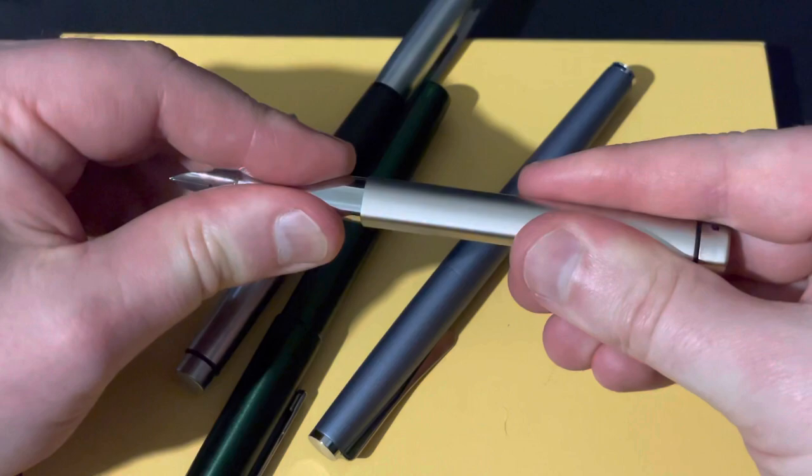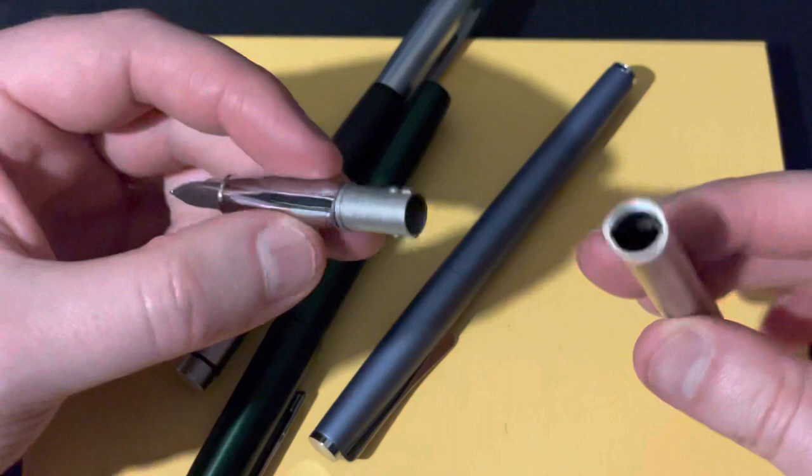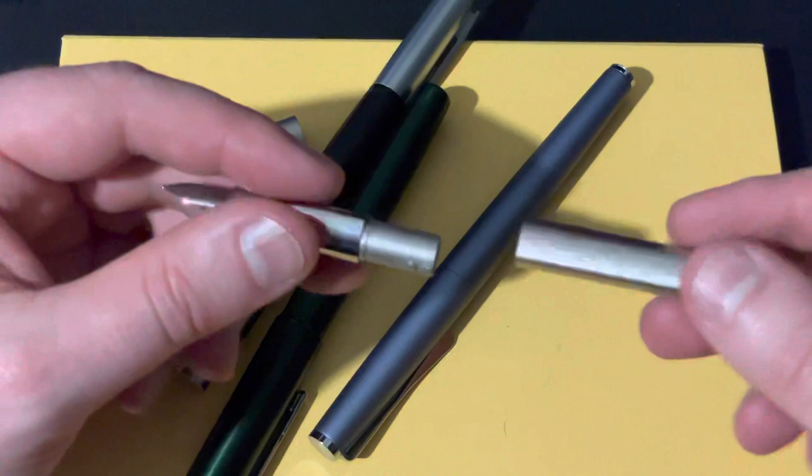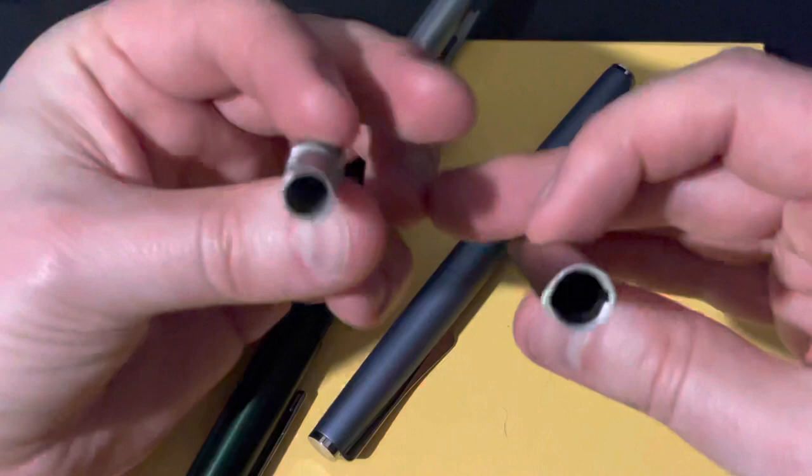So when we open it up you twist and unlike most Lamy pens there's no threads actually. It just clicks and turns and it's like a lug nut sort of situation here. So it opens very quickly and then a standard Lamy z26 z27 converter or cartridge will go in there.